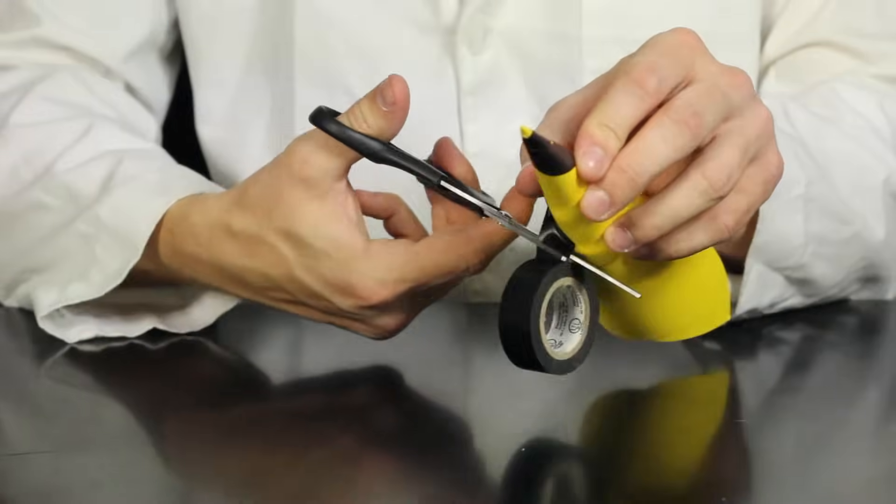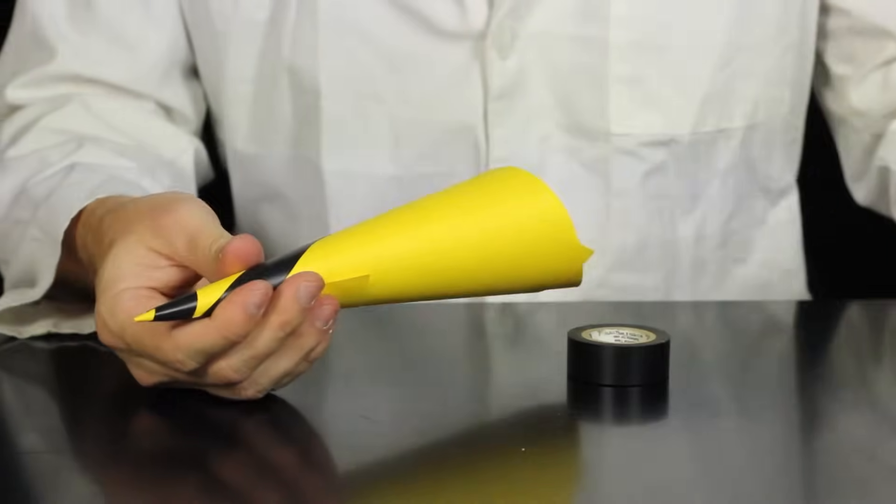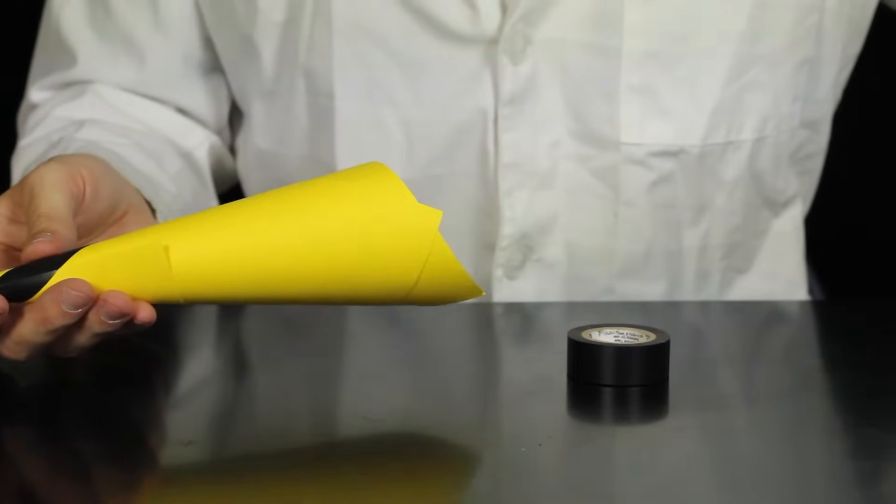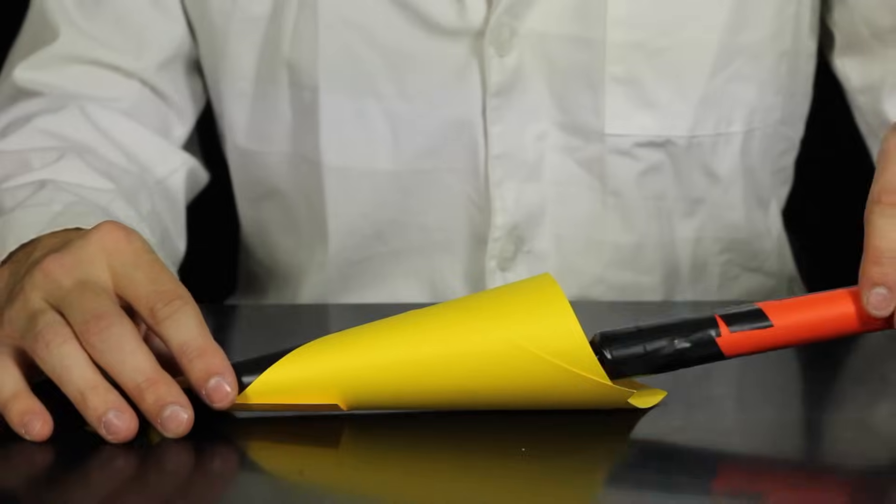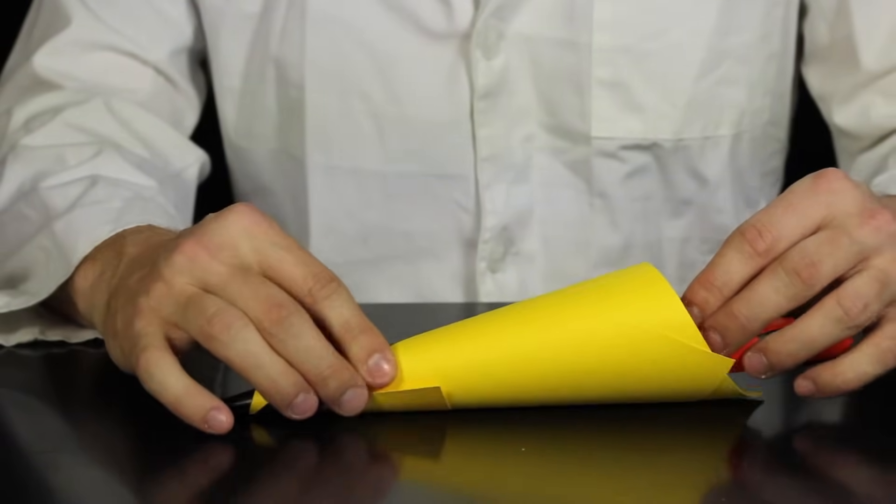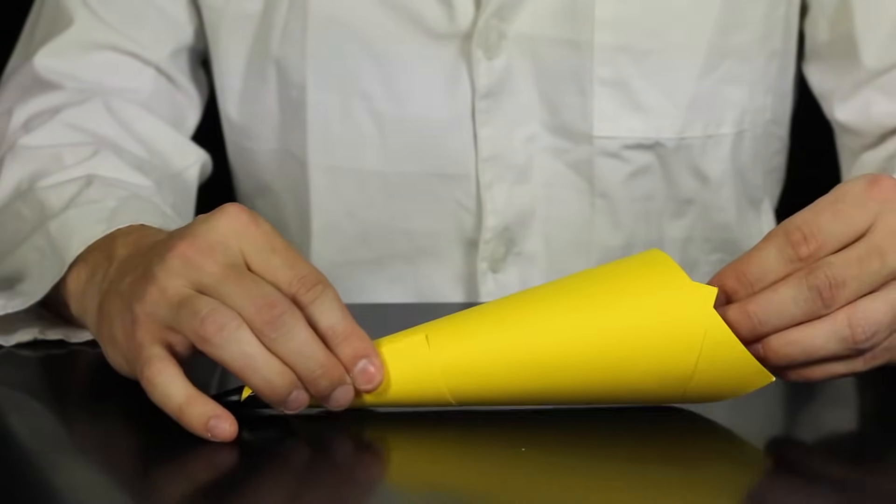The nose cone is way too big for our rocket as is, so what you need to do is figure out where you need to cut it. Tape the body of your rocket and slide it into the nose cone, and feel where the rocket meets the edge of the nose cone. This is where you need to cut it.